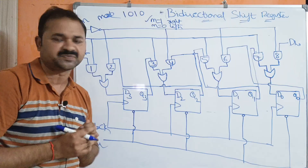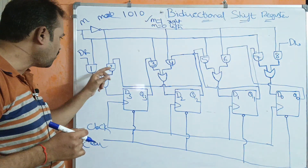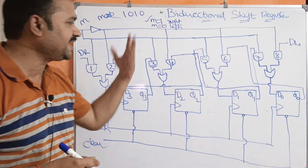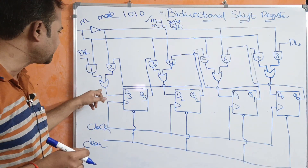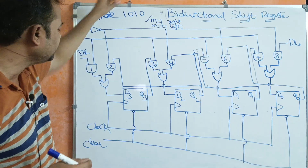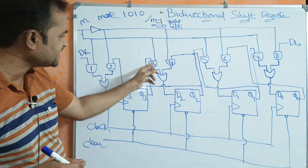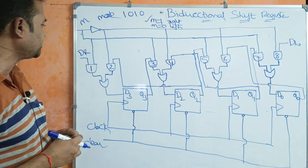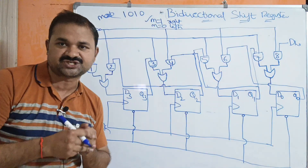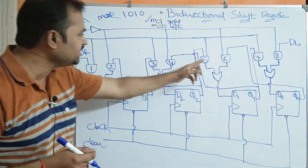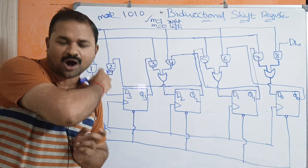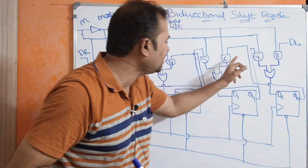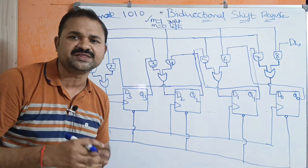Here we have taken AND gates — totally 8 AND gates. These are connected to OR gates that accept input from the AND gates. In order to perform the shift right operation, we use odd-numbered AND gates: 1, 3, 5, and 7. Whereas with the help of the even-numbered AND gates — 2, 4, 6, and 8 — we perform the shift left operation.